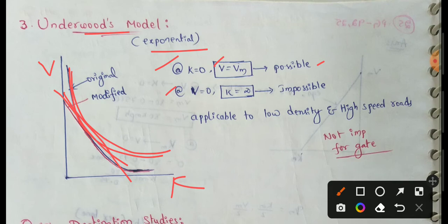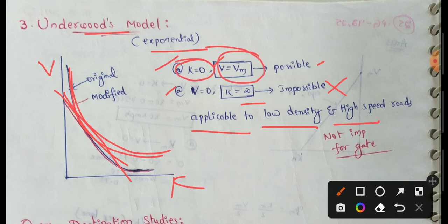At low densities, k is equal to 0, meaning speed v is equal to maximum. Maximum speed means v equals maximum. In this condition, it is possible.